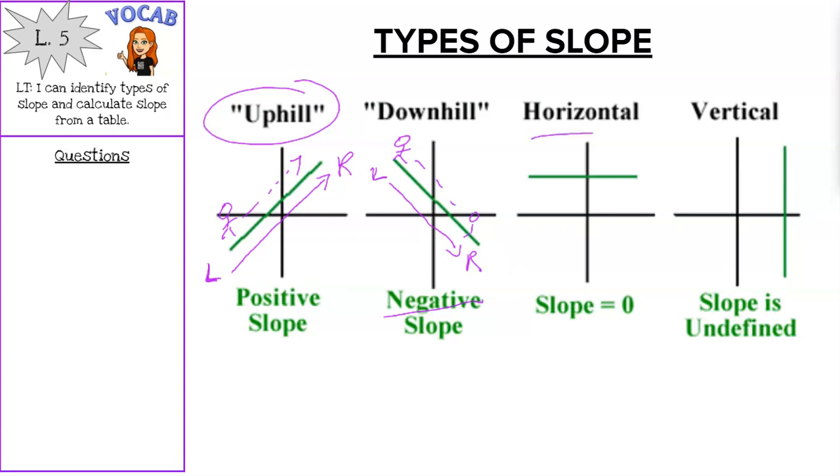Horizontal slope is just left and right. It's just like a straight left and right line. If you were to walk that, it'd be like walking on the ground. So you wouldn't go up or down, you just go straight across. So that's a zero slope.